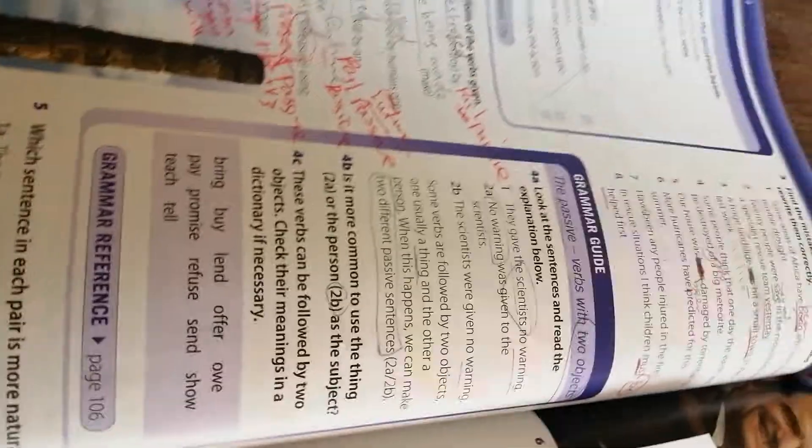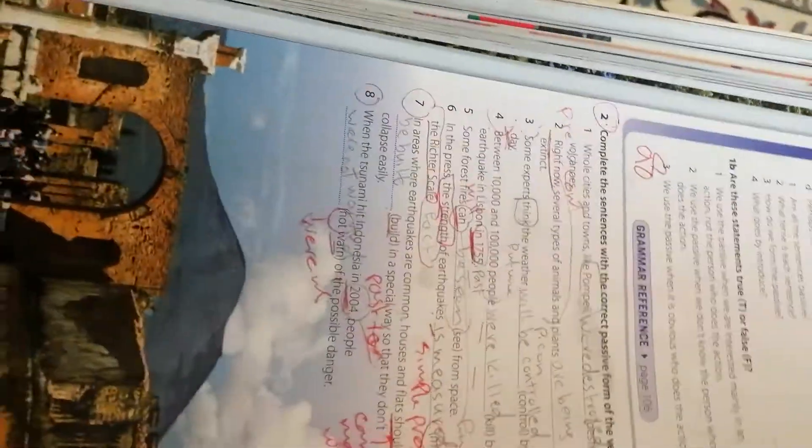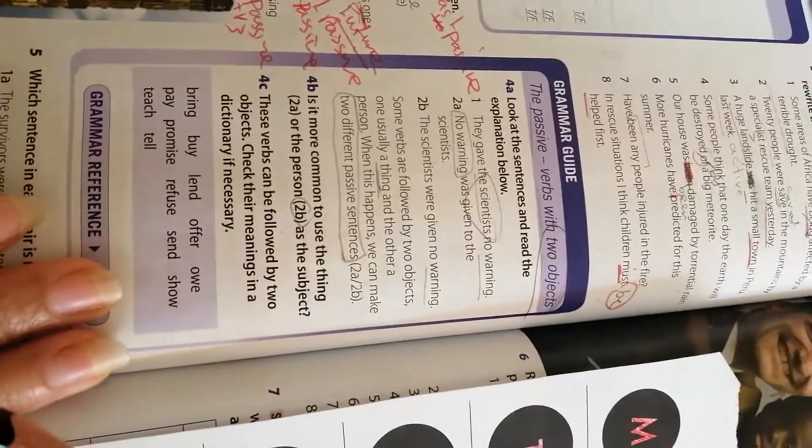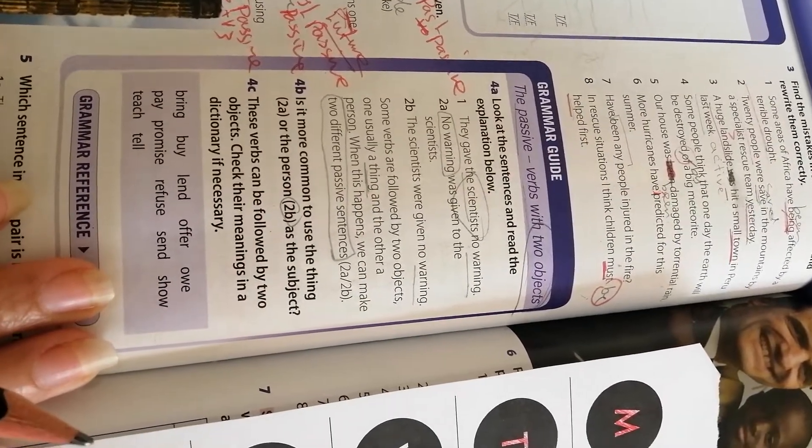Good morning, Gretan. How are you today? Today, insha'Allah, we will continue talking about the passive. This is found in your student book, page 98. We are going to continue talking about the passive, but when we have verbs with two objects.